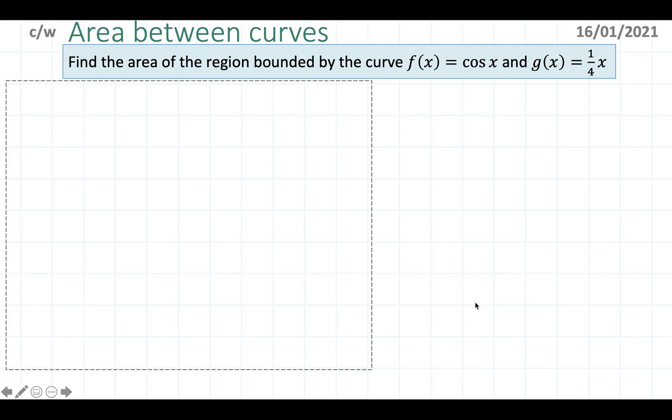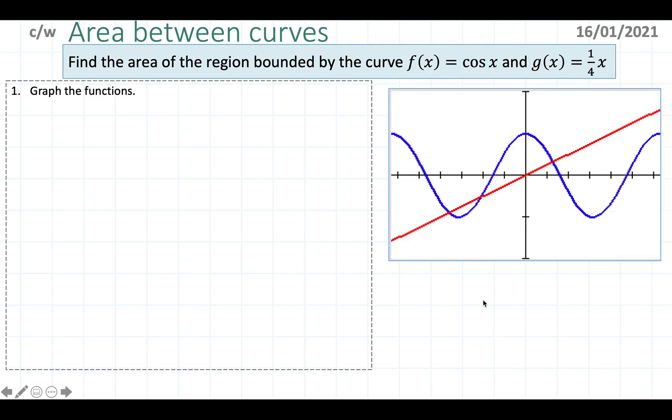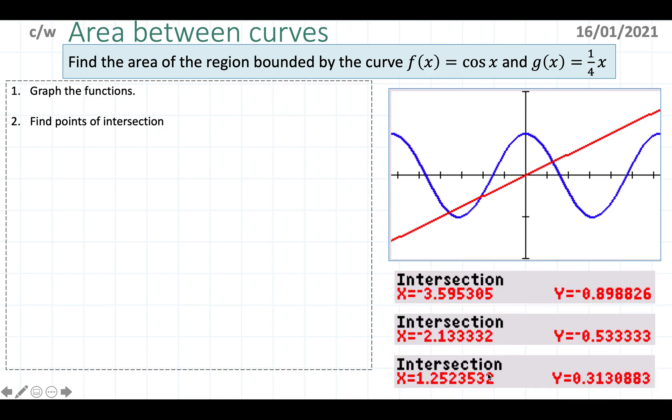Following the same exact steps as usual, you want to graph the functions first. Graph them together and the GDC gives you the color code. I've done blue for cos x and red for the 1/4 x. From here I need to find the points of intersection, so I'm going to repeat this a couple of times using second calculate or second trace and then intersection. I have three points of intersection here.